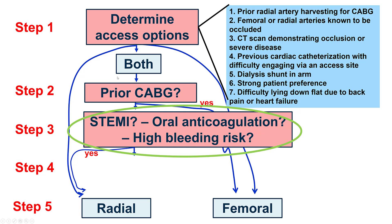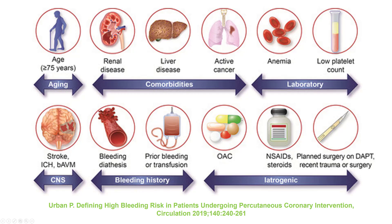The third step is regarding the patient's presentation. Is the patient presenting with STEMI, or on high bleeding risk — for example, receiving oral anticoagulation? In such patients with high bleeding risk, going radial is preferred due to the lower likelihood of access site complications. Classic examples include patients on oral anticoagulation, anemic patients, and older patients — any patient in whom there is concern about bleeding, radial access is preferred.